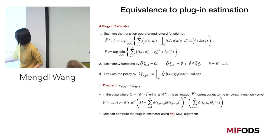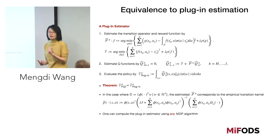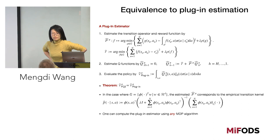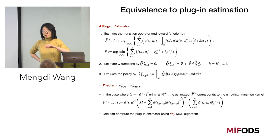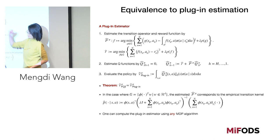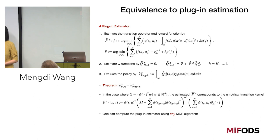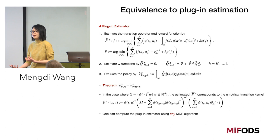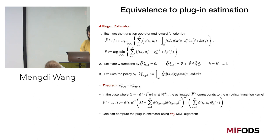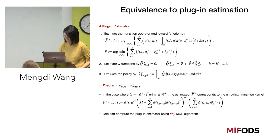An audience member asks: is π the policy used in the data or the off-policy target? The speaker clarifies: π is the target policy we want to evaluate; we do not know the behavioral policy used in the data. The regression-based policy evaluator is equivalent to a plug-in estimator: we define an empirical transition operator by regression, and this empirical operator converges to a projection of the ground-truth transition operator onto the function class. We also define an empirical reward function. With both, we solve the empirical approximation of the MDP using any standard algorithm.